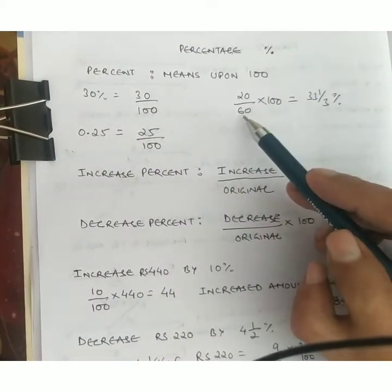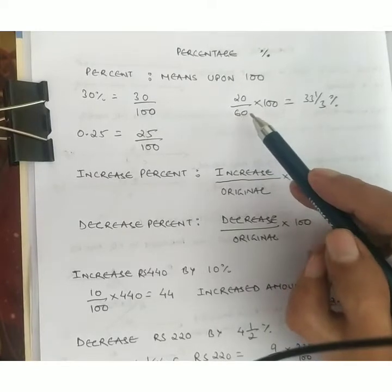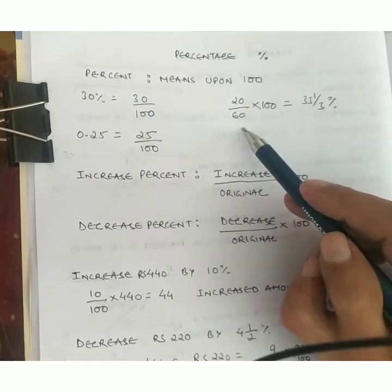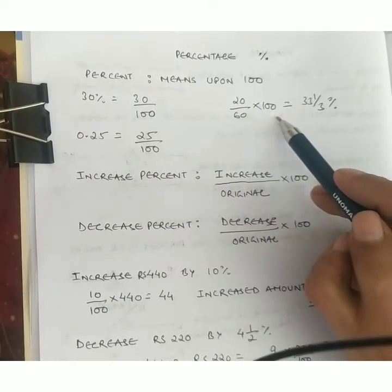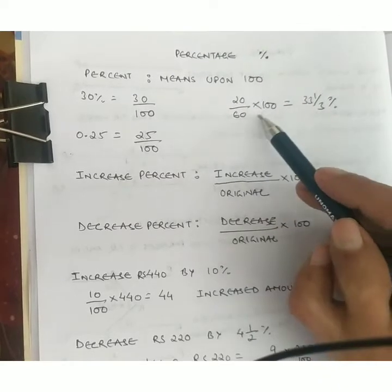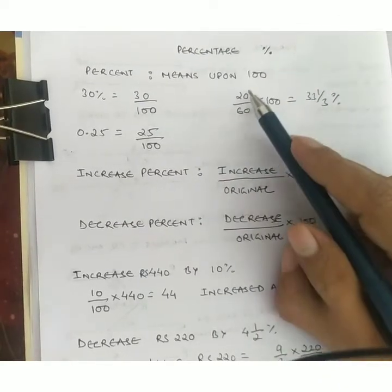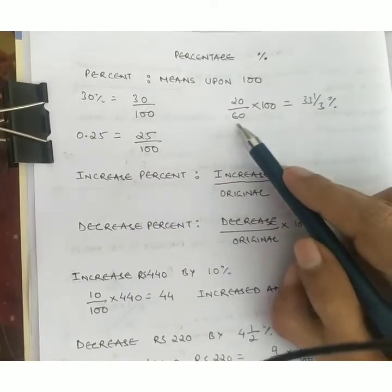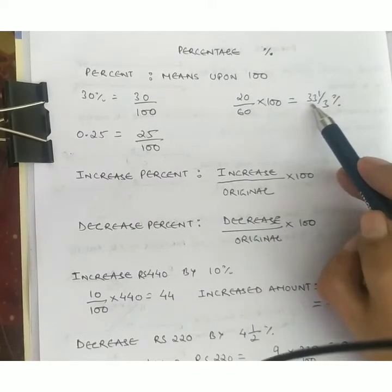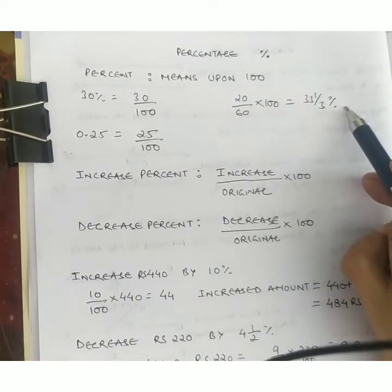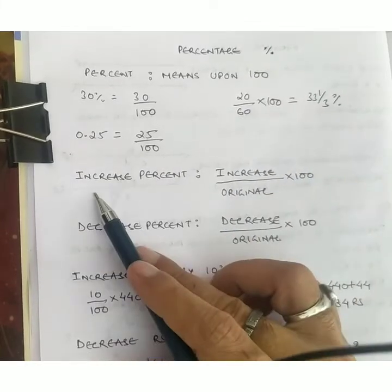Suppose you got 20 out of 60. This can be expressed as a percentage: 20 upon 60 into 100. When you cancel out 20 and 60 into 100, you will get 33⅓ percent.